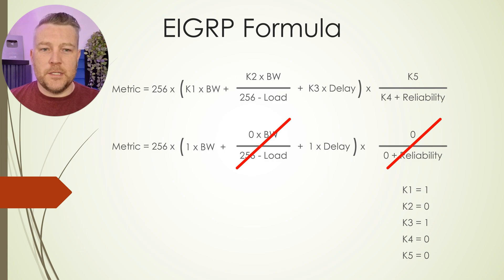So when we simplify this right down, what do we find is used by default in EIGRP? Well, answering our original question from this video, what do we use by default? Well, we only use bandwidth and delay.